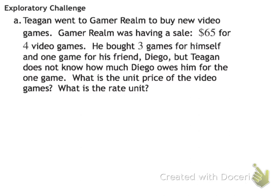Now we're on the exploratory challenge. Tegan went to GamerRealm to buy new video games. GamerRealm was having a sale: $65 for four video games. He bought three games for himself and one game for his friend Diego, but Tegan does not know how much Diego owes him for the one game. What is the unit price of the video game and what is the rate unit? We know it costs $65 for four games, and we need to figure out the unit price — how much it would cost for one instead of four.